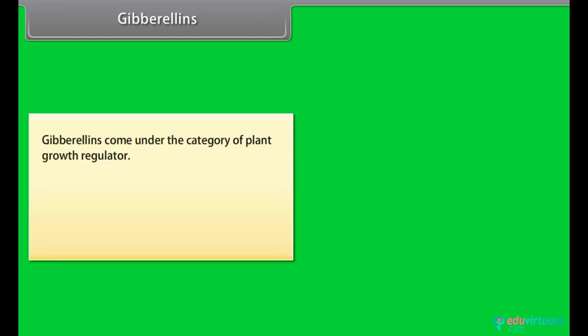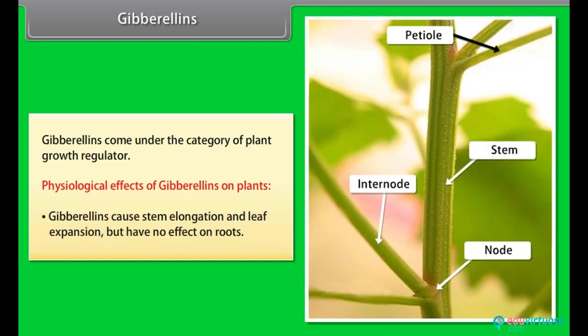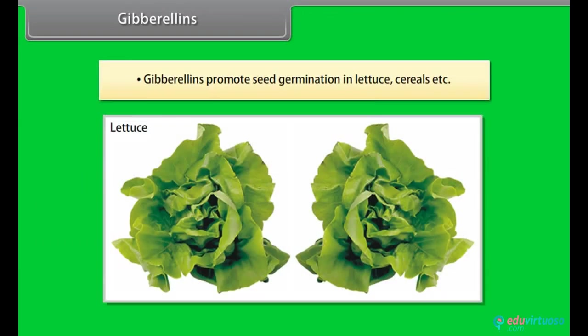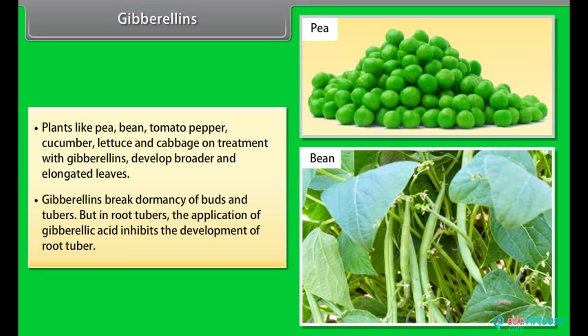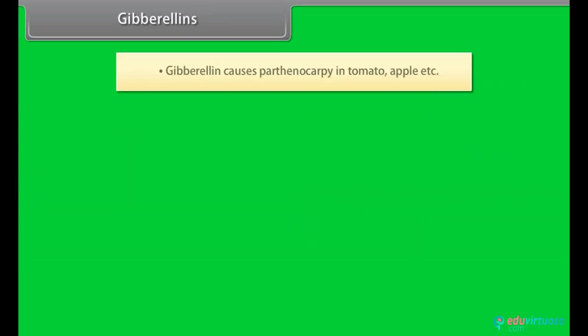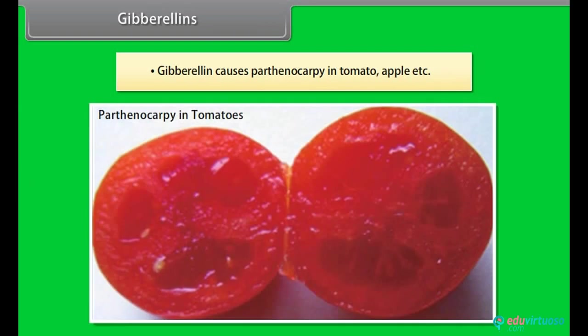Gibberellins. Gibberellins come under the category of plant growth regulator. Physiological effects of gibberellins on plants. Gibberellins cause stem elongation and leaf expansion but have no effect on roots. Gibberellins promote seed germination in lettuce, cereals, etc. Plants like pea, bean, tomato, pepper, cucumber, lettuce and cabbage on treatment with gibberellins develop broader and elongated leaves. Gibberellins break dormancy of buds and tubers. But in root tubers, the application of gibberellic acid inhibits the development of root tubers. Gibberellin causes parthenocarpy in tomato, apple, etc.